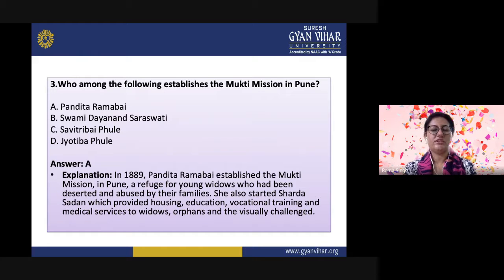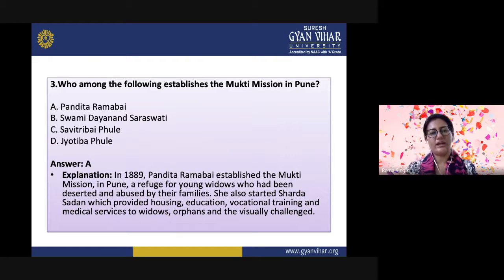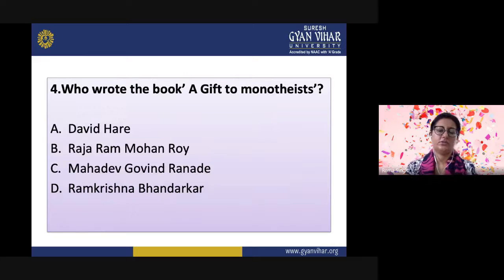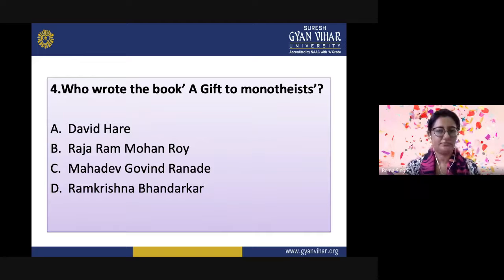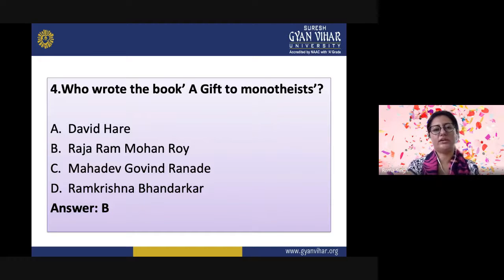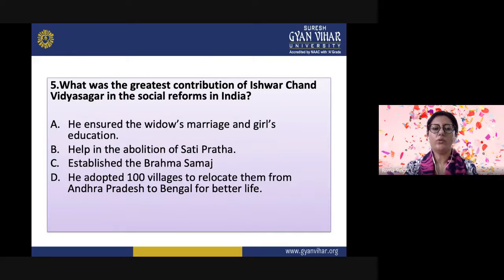In 1889, Pandita Ramabai established the Mukti Mission in Pune. Educated in Europe, she established a refuge for young widows who had been deserted and abused by their families. She started Sharda Sadhan, which provided housing, education, vocational training, and medical services to widows, orphans, and the visually challenged. Question 4: Who wrote the book Gift to Monotheism? Options are: David Hare, Raja Ram Mohan Roy, Mahadev Govind Ranade, or Ramakrishna Bhandarkar. Since Raja Ram Mohan Roy denied many gods and believed in only one God, he wrote the book A Gift to Monotheism.